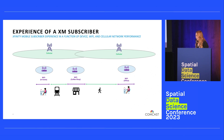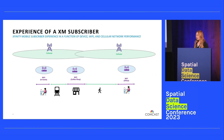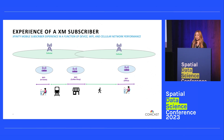Now let's look at that commute for an XM subscriber. We start our day at home connected to Wi-Fi. While taking the train into the city, we connect to a nearby cellular tower. Luckily, the coffee shop is also a Comcast subscriber broadcasting Xfinity Wi-Fi hotspots, so I can connect to their hotspot and offload data while waiting for my coffee. I then walk back to the office on cellular, and once there, utilize the Wi-Fi hotspots in the office. The transitions between cellular and Wi-Fi are automatic and seamless — no username or password required.